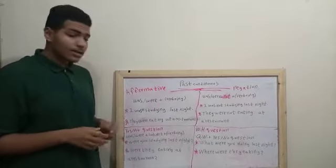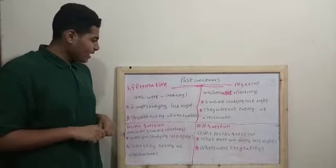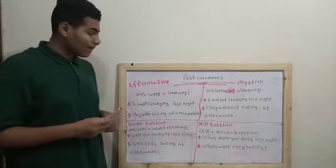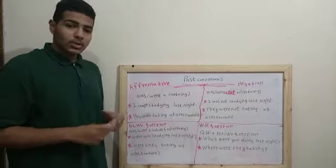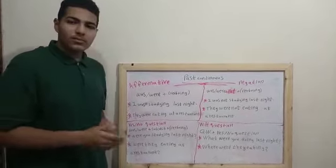Let's begin with the formation and let's start with the affirmative. In the affirmative, we use the past form of the verb be, which is was or were, plus the verb in the continuous form.